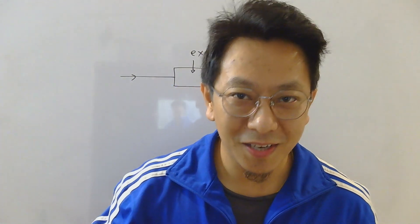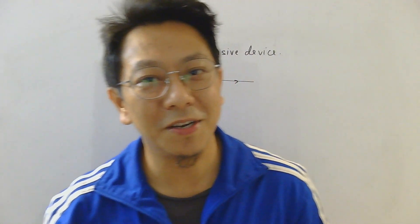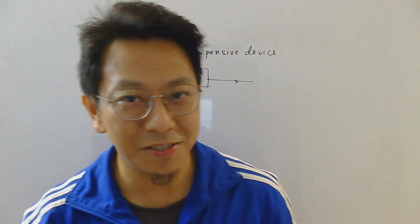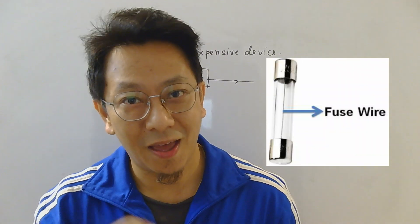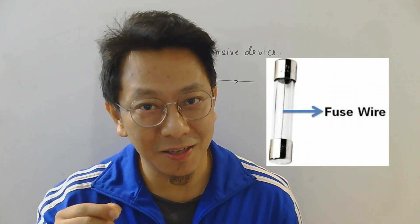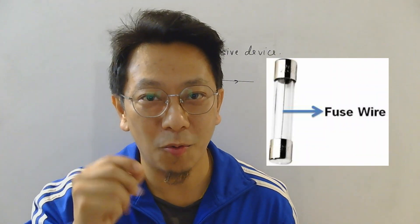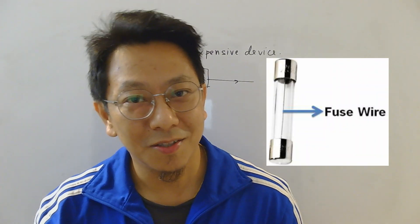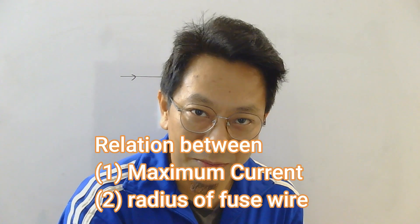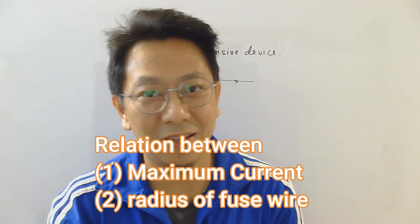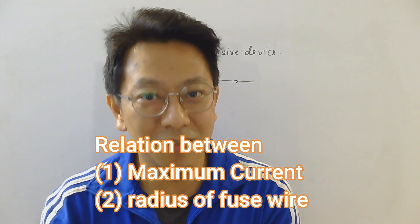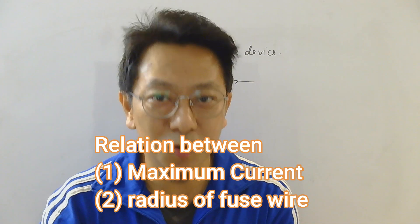Hi everyone. In today's lecture we will derive a relation between the maximum current at which a fuse wire melts and the radius of the wire. So let's see what is the relation between the maximum current, the limiting current, and the radius of the fuse wire.